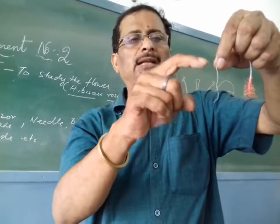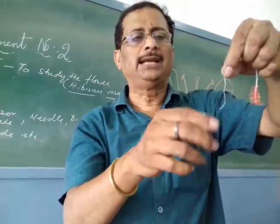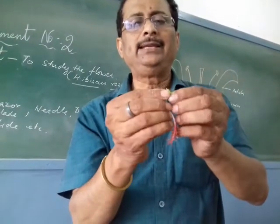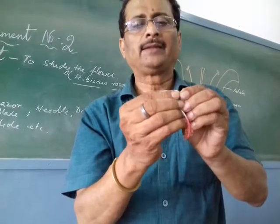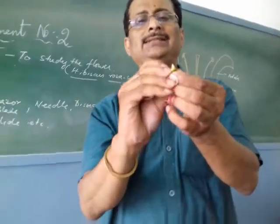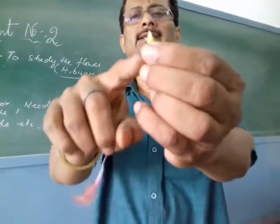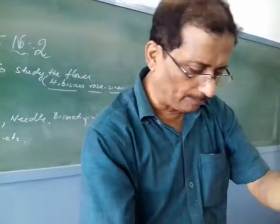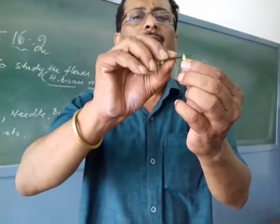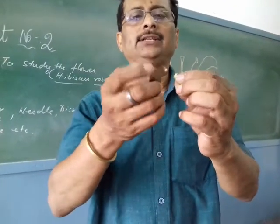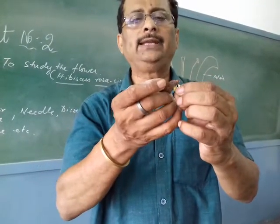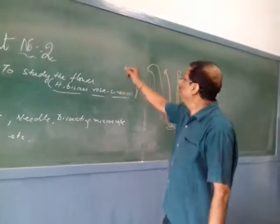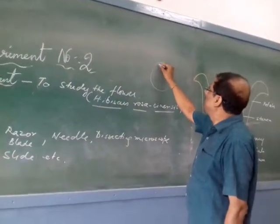After pollination, the pollen grain travels through this style and ultimately reaches the base of the thalamus. You can see the thalamus, and over the thalamus the ovary is present. The ovary is this particular structure with the remaining style on top of it. If you take a section of this ovary and place it on a slide to view under the microscope, you can see it is a pentacarpellary ovary.